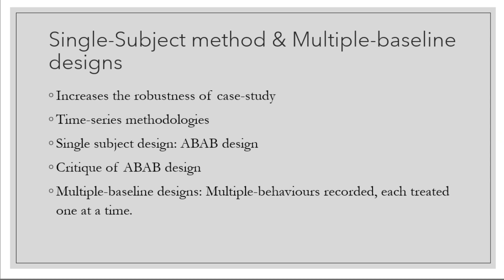The ABAB design alternates between control and intervention, where the A stage stands for control and the B stage stands for intervention. Basically, if you want to find out whether your girlfriend will hug you more if you keep bringing her flowers, analyze her baseline level of hugging you in the first A stage, then bring flowers consistently in the B stage, stop bringing flowers in the A stage again, and then bring flowers again in the B stage.